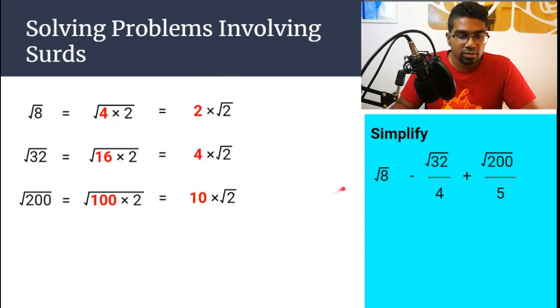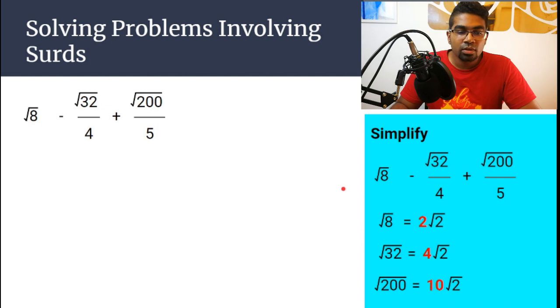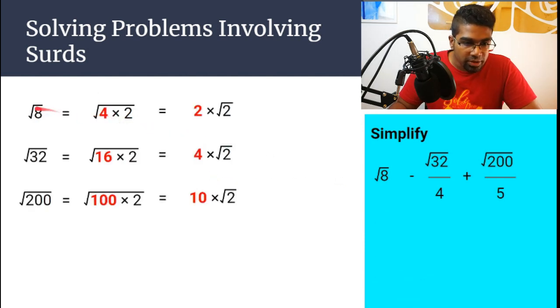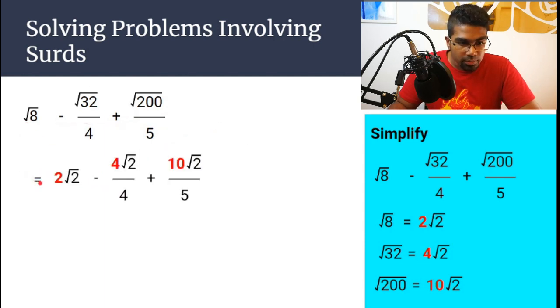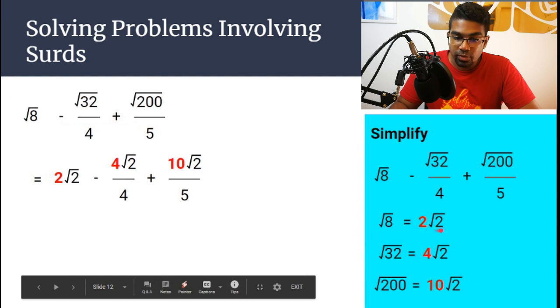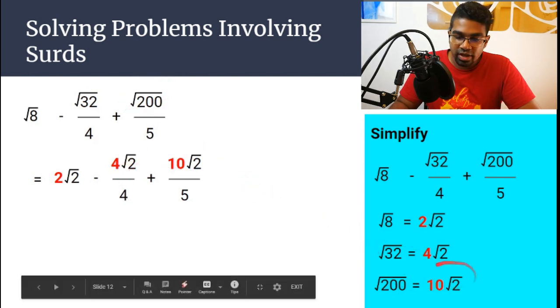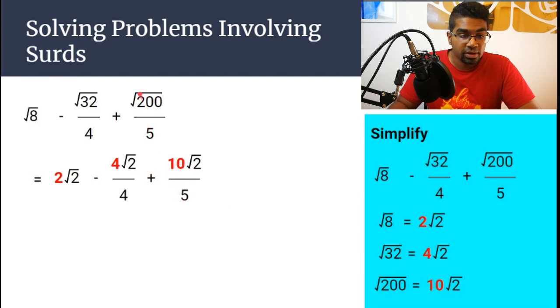Once we've done this, let's look back at our expression. Of course, when you're attempting this question for your exams or even for your own practice, you don't have to pick them out and do them separately. You can do them directly in the expression itself. So this would equal to square root of 8, we already established, is 2 square root of 2. So 2 square root of 2 minus square root of 32 is 4 square root of 2, 4 square root of 2 over 4. And then we have square root of 200, which is 10 square root of 2. So this would be written as 10 square root of 2 over 5 here.